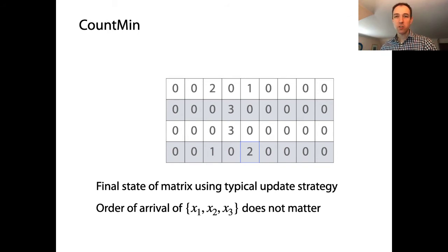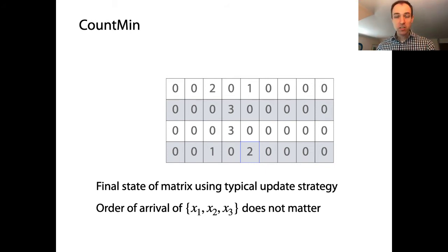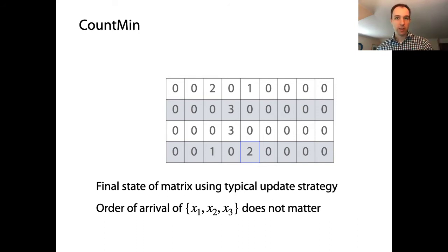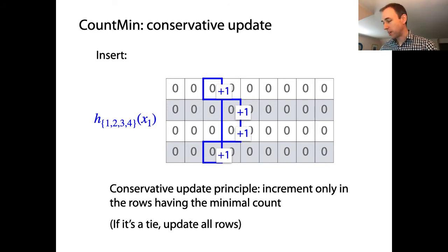Here's an alternative strategy for updating the count min sketch: the conservative update strategy. The goal is to minimize the number of collisions without losing the property that a point query estimate is at least as large as the true answer — we keep f(x) ≤ f̃(x) — but we make an effort to eliminate some of the over-counting provably due to collisions. Basically, we update only some of the time.